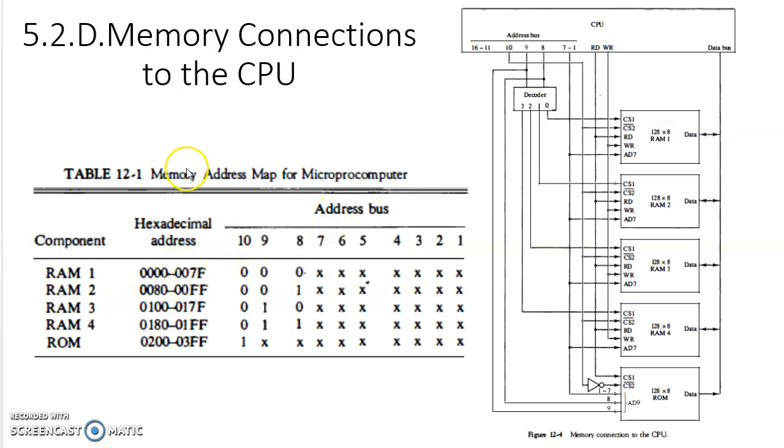What is memory address map? Memory address map is a map which shows which memory location is existing in which memory chip. For example, there are 1024 memory locations not available in a single chip. The 1024 memory locations are available in 5 different chips.